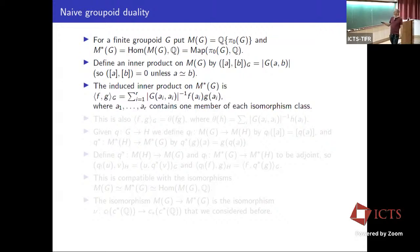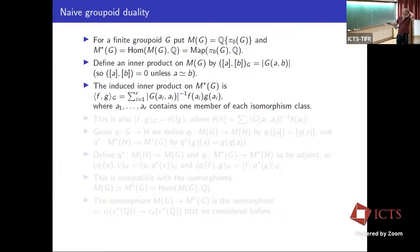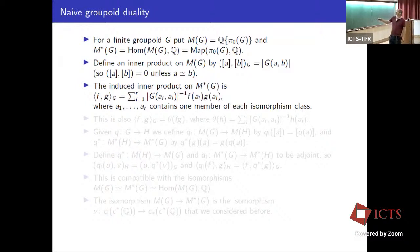We transfer the inner product to get one on M^*(G). To describe it explicitly: choose one representative from each isomorphism class A_1 up to A_R. The inner product of F and G is the sum over representatives of the product of their values, multiplied by the inverse of the size of the automorphism group. The order appears on the M(G) side, and once you work through the dualities, the inverse of that order comes into the formula.